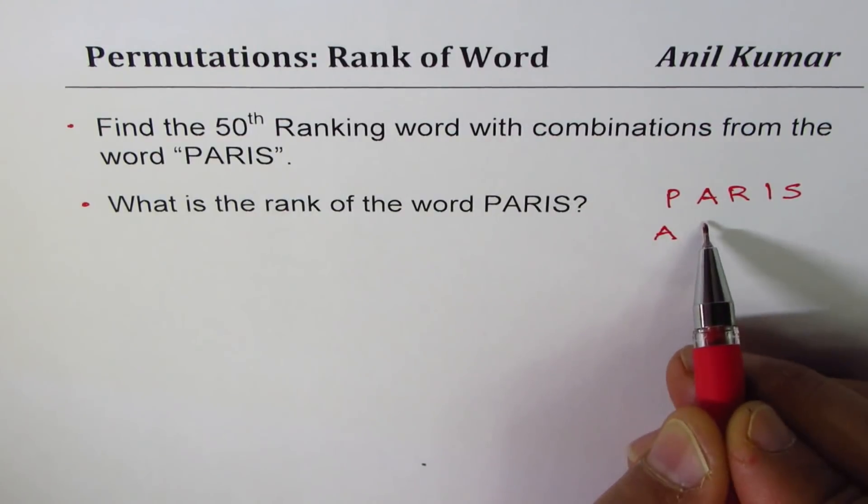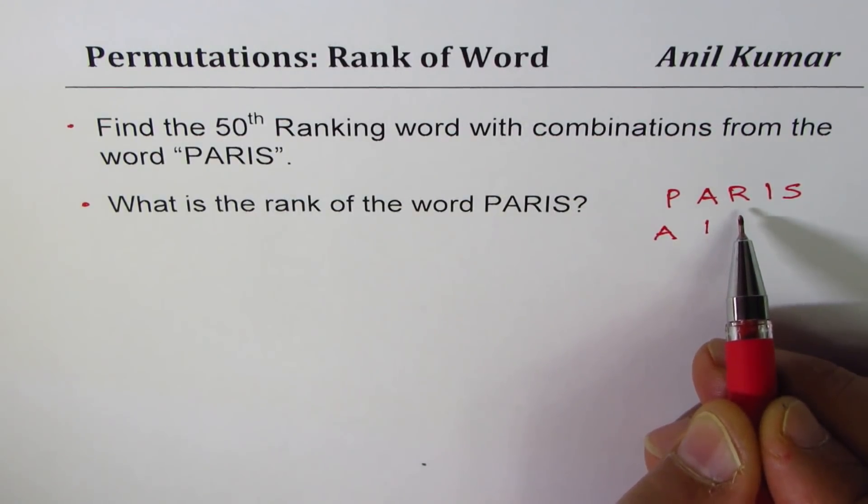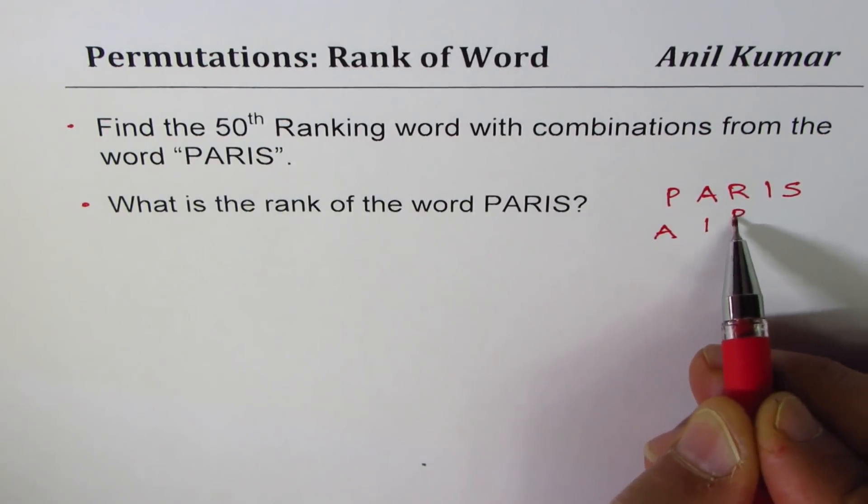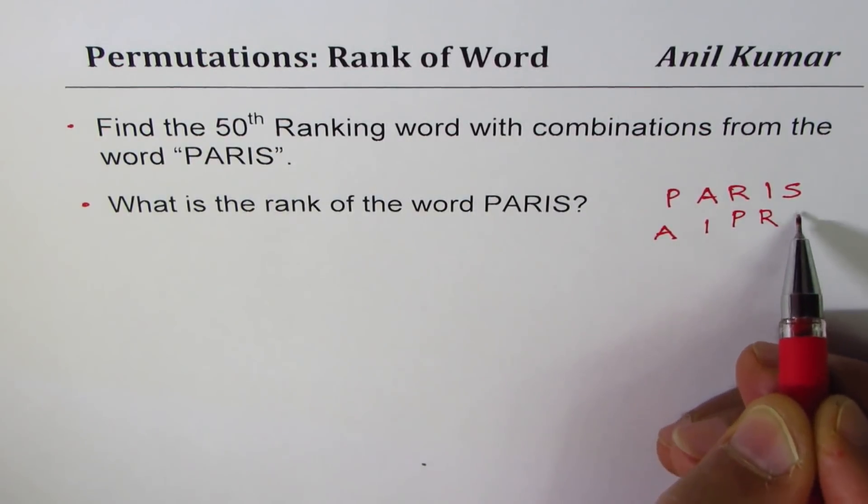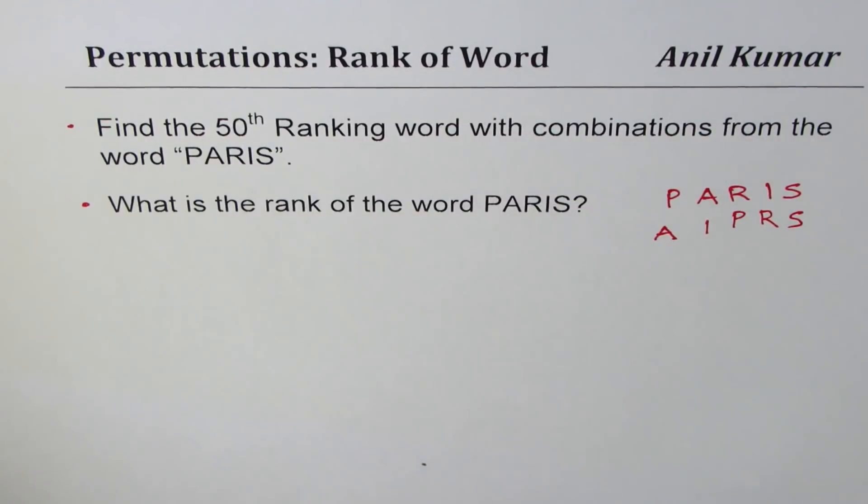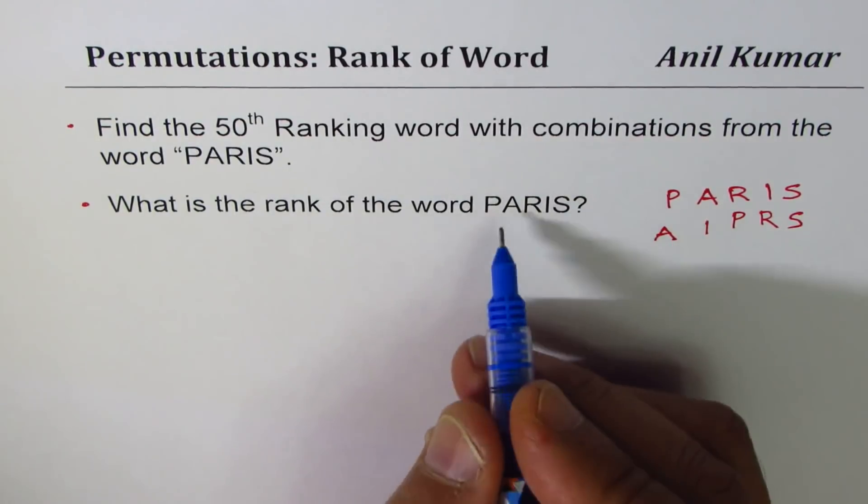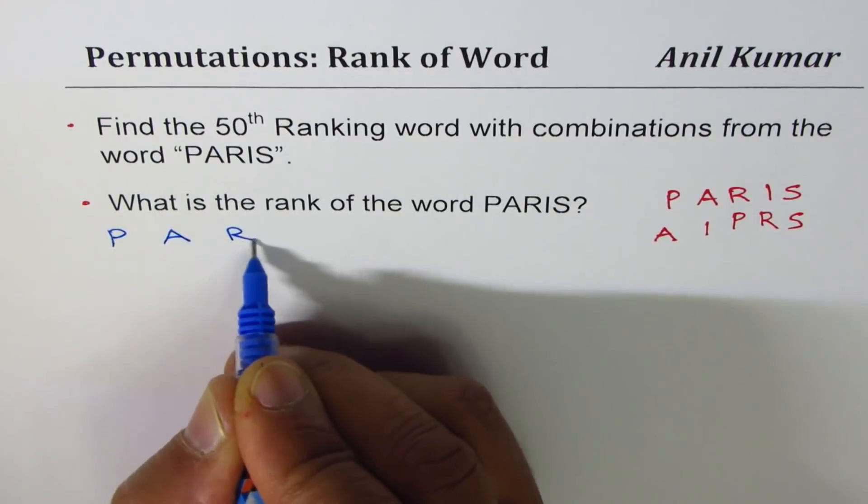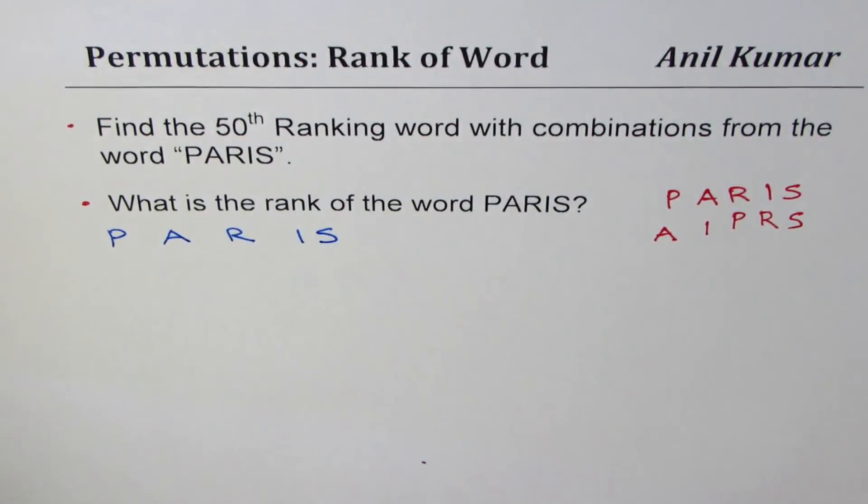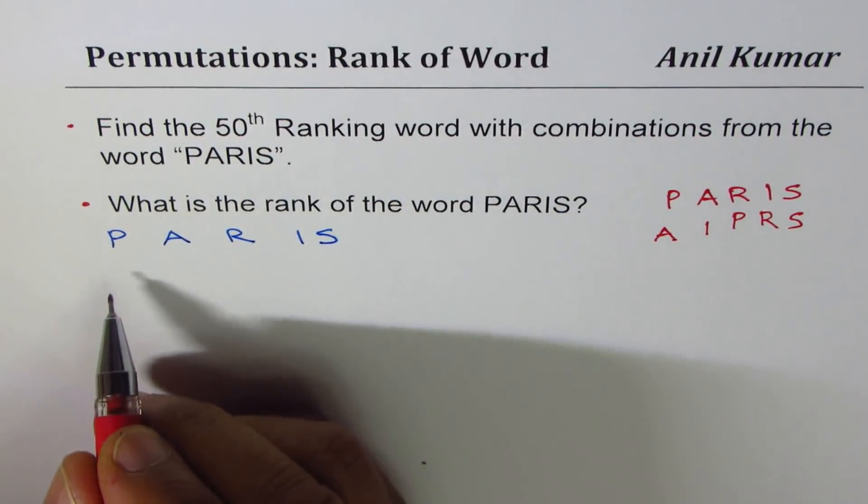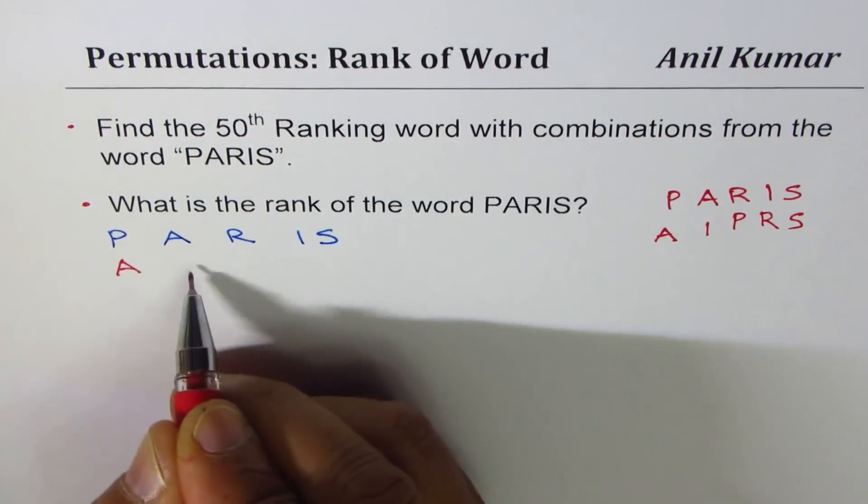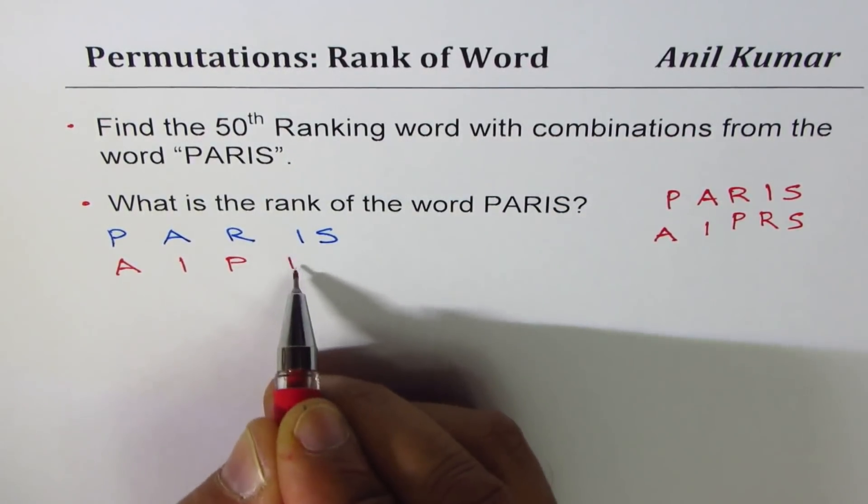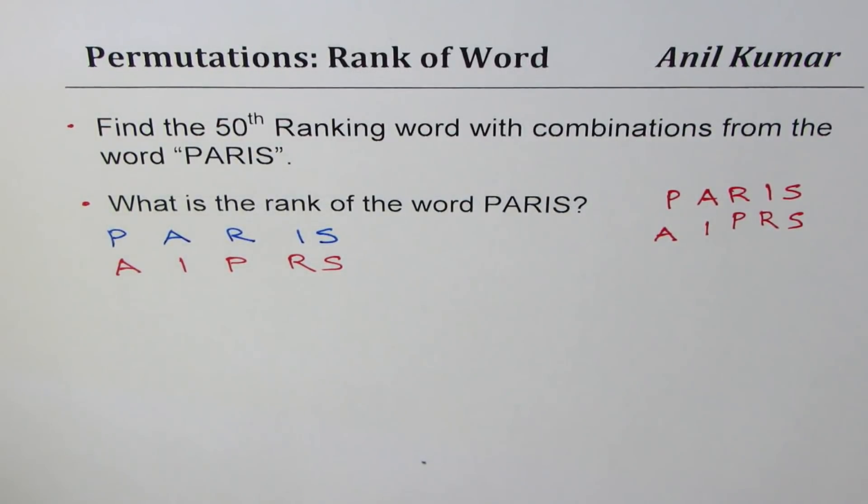I comes next in alphabetical order, then P, then R, then S. So that is my first word in the list. So what we do here is, we begin with the word Paris. And then we write down the first in our list, which is A, I, P, R, S. That is going to be my first word.